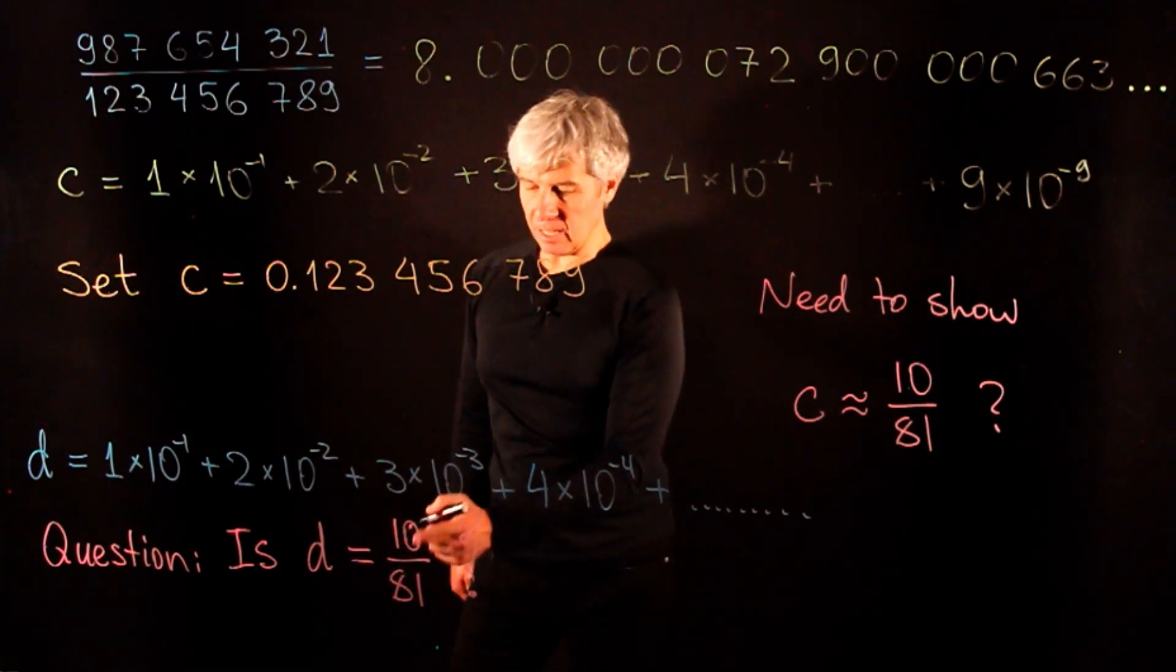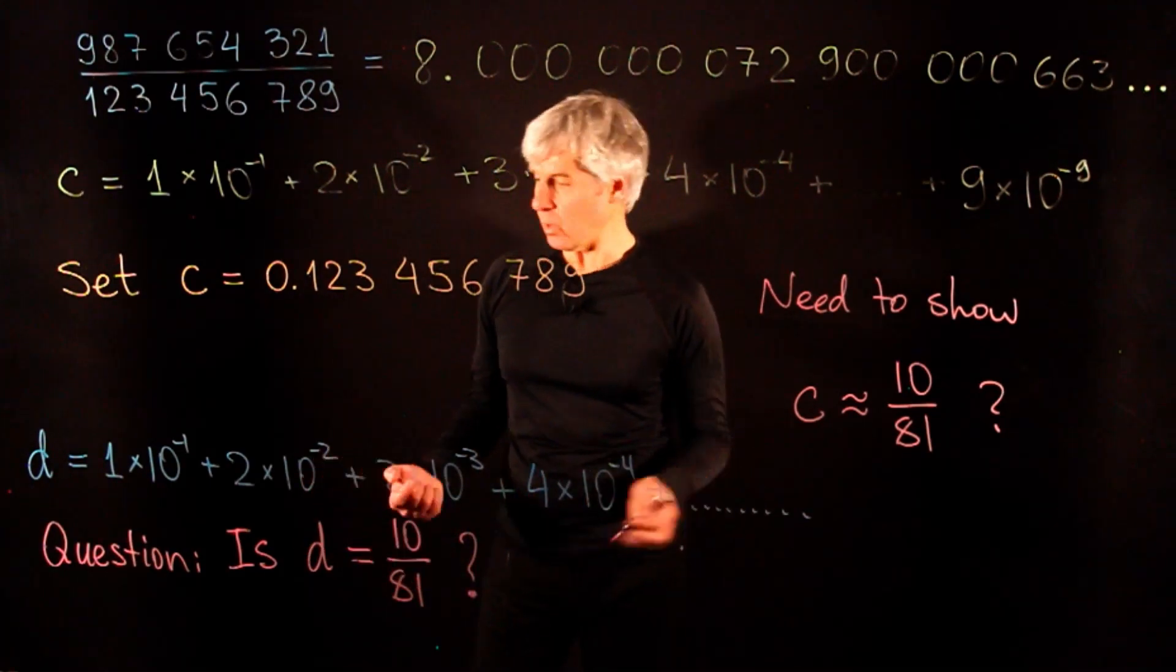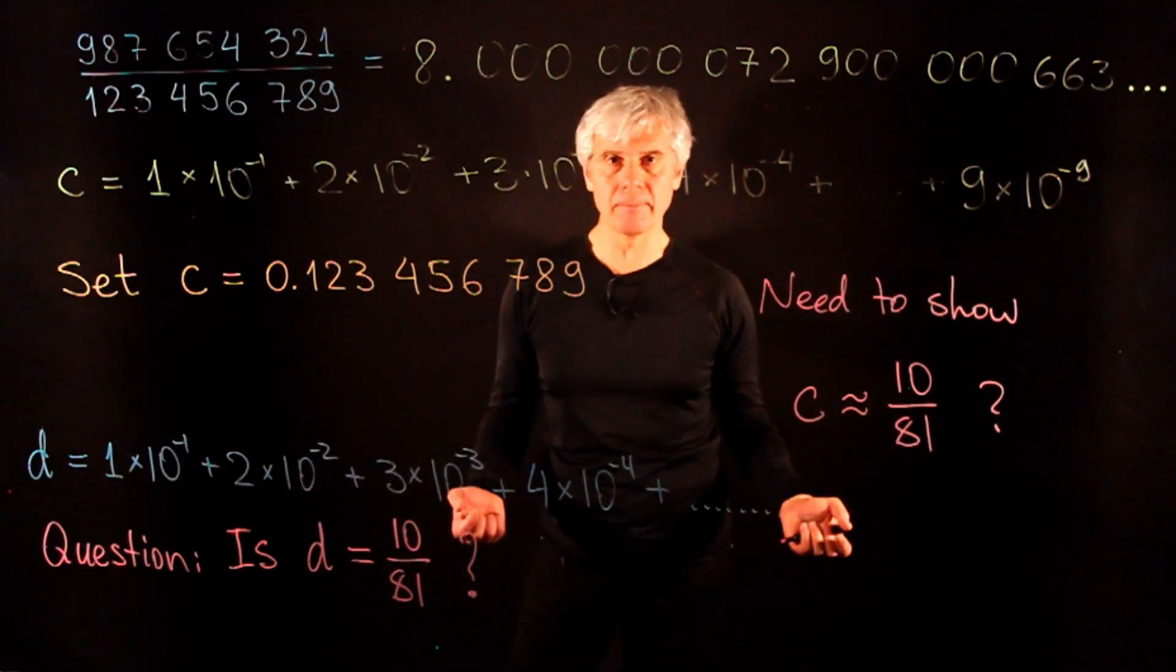So the question that we have is, is d equal to 10 over 81 exactly? I don't know. How do we compute such an infinite sum?